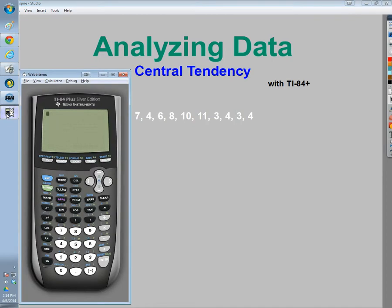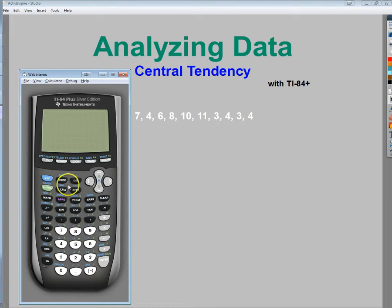Now when you have one set of data like this, you want to just punch it in as a list. In order to edit a list, you go to the stat button. So go in and then under the edit menu, just click enter for number one. I've already typed it in, so you don't have to put it in order before you type it in.